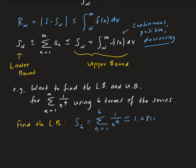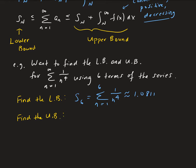Now to get the upper bound, we need to calculate the integral and then add that to our lower bound. So we need to calculate the improper integral from 6 to infinity of 1 over x to the 4th. Since this is an improper integral, we have to rewrite this in terms of a limit: the limit as b goes to infinity of the integral from 6 to b of 1 over x to the 4th.